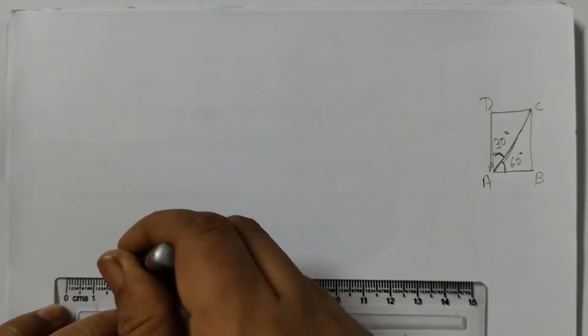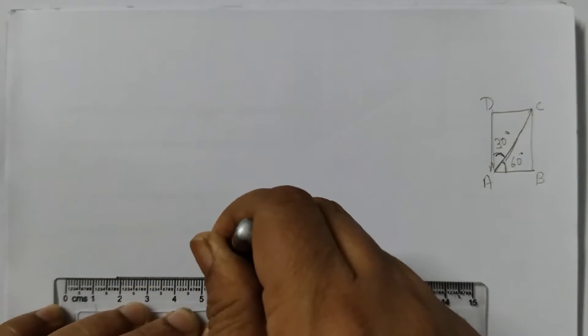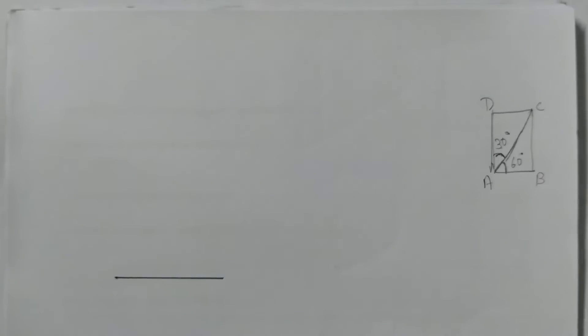Step number 1, you can draw a line segment of any length. I am taking this length. Any length, you don't have to measure it. And label it as A and B. So AB is the line segment.